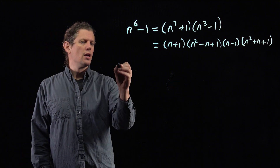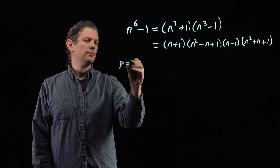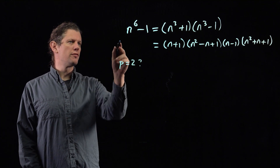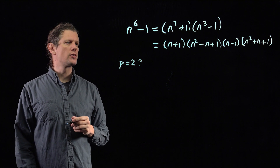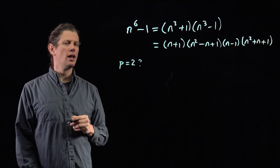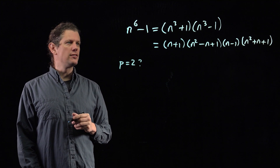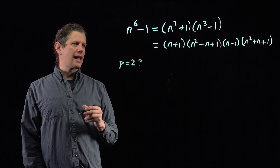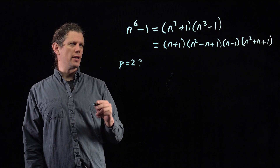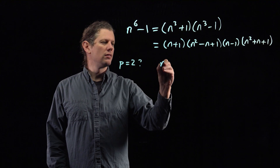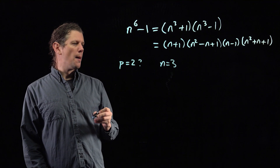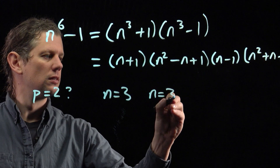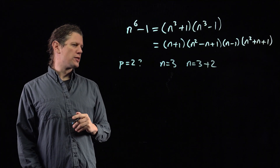So we'll deal with p = 2 and p = 3 now. If p is 2, we're asking when is n⁶ - 1 even. The answer is that n⁶ - 1 is even when n is odd. So the smallest n greater than 1 for which p divides n⁶ - 1 is n = 3. But then 5 is also odd, so 2 satisfies the problem.